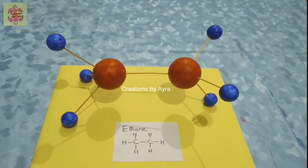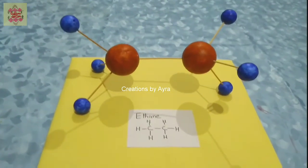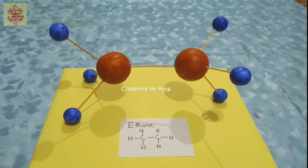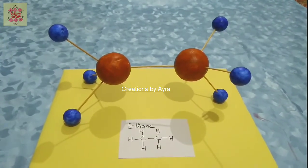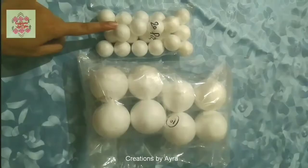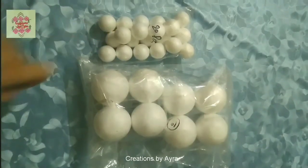Assalamu alaikum, welcome back to my channel. Today I'm going to show you how to make a 3D model of an ethane molecule quickly and easily. For that we need some simple materials: styrofoam balls in two different sizes. The larger size is for carbon atoms and smaller for hydrogen atoms.